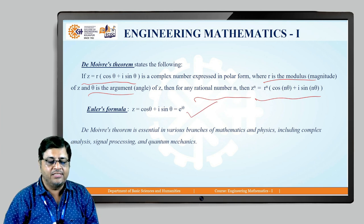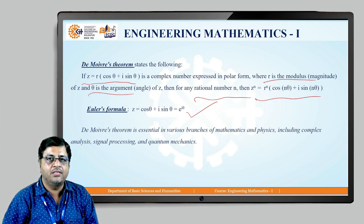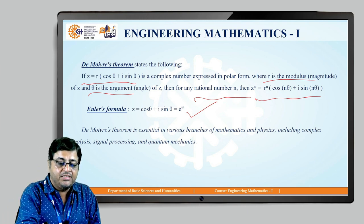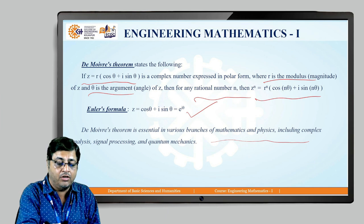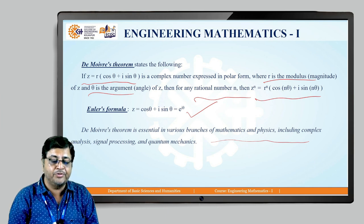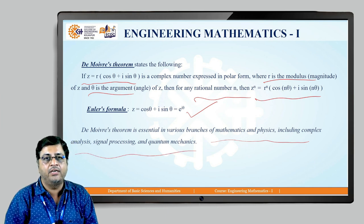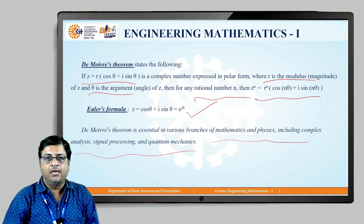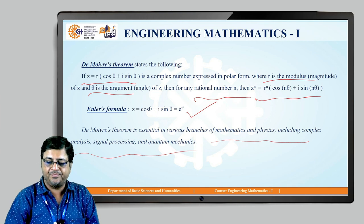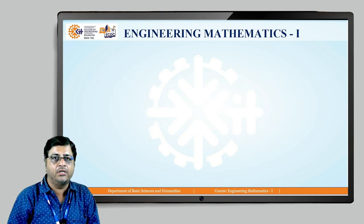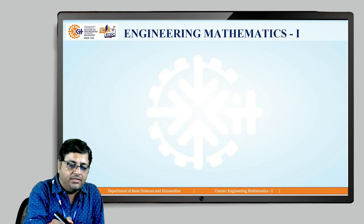Euler's formula also states that z equals cos θ + i sin θ, which is nothing but e raised to iθ. De Moivre's theorem is essential in various branches of mathematics and physics including complex analysis, signal processing, and quantum mechanics. I will show you here one example of De Moivre's theorem.